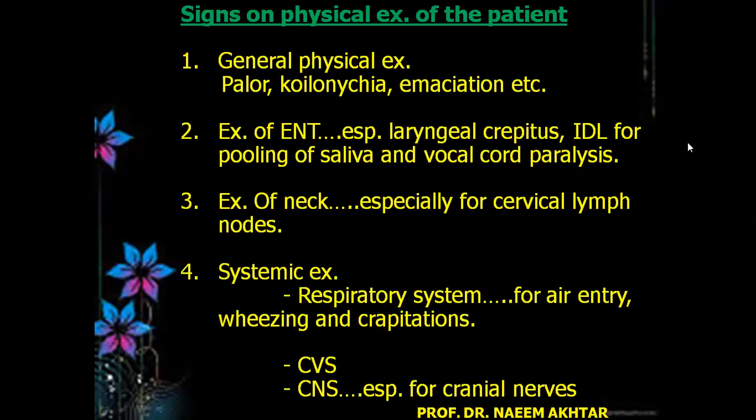Signs on physical examination: general physical examination will show pallor, koilonychia, and emaciation. Examination of the ENT — especially laryngeal — is ideal for pooling of saliva and vocal cord paralysis. Examination of the neck is important to note cervical lymph node metastasis. Systemic examination of the respiratory, cardiovascular, and central nervous systems is also mandatory.